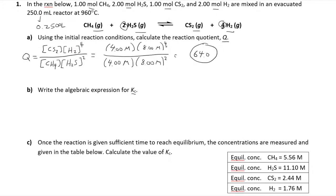Q tells you where the reaction is initially. We know that a reaction is going to shift from initial conditions to equilibrium — unless it's already at equilibrium, but usually it's not when you start out. You throw a bunch of stuff in a container, and it's going to go to equilibrium. Q gives us the first piece of the puzzle to find out which way it's going to shift — towards reactants or towards products. 64.0 seems like it's very product-heavy right now.